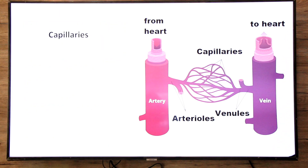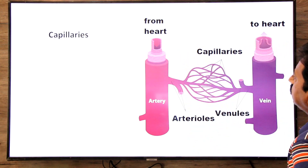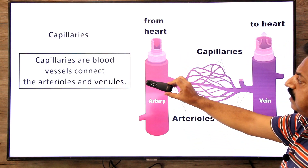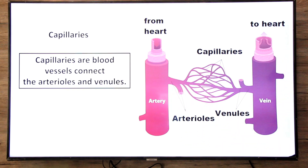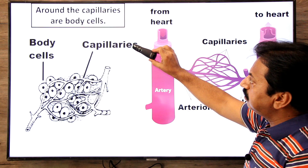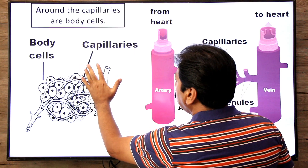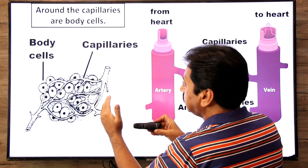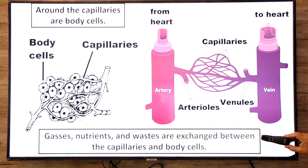Now capillaries. Capillaries are the blood vessels that connect arterioles with the venules. Around the capillaries are body cells. The exchange of gases, nutrients, and waste occurs between the capillaries and body cells.